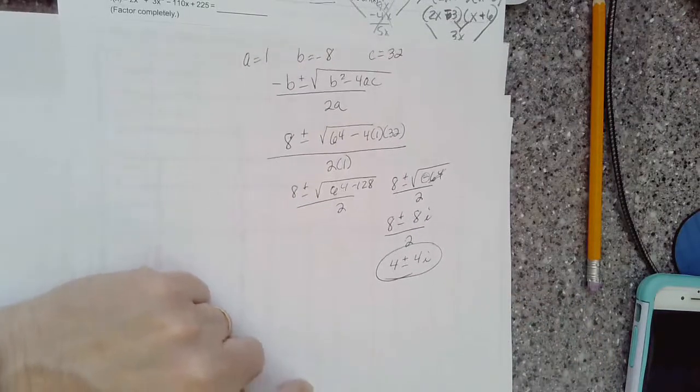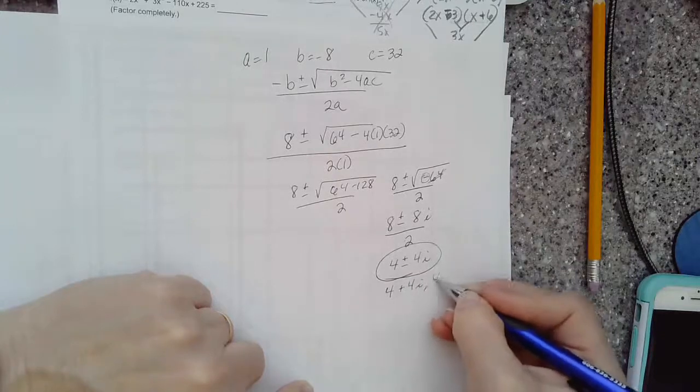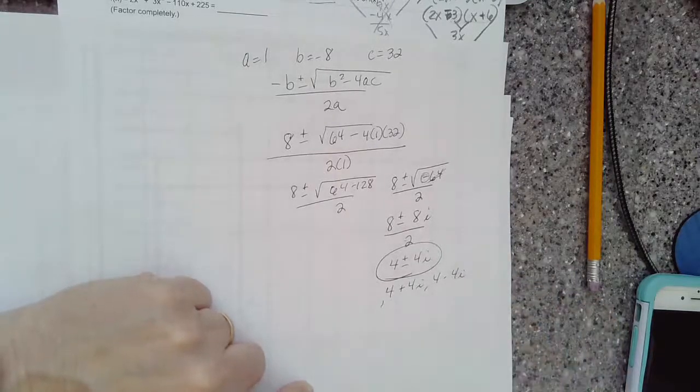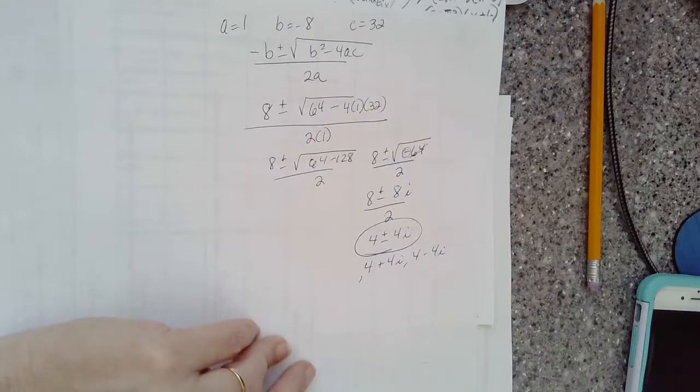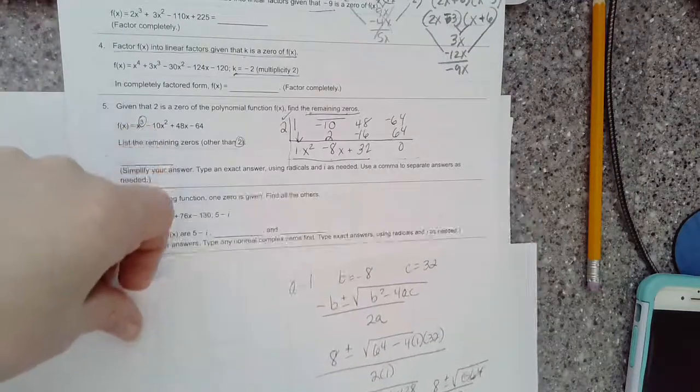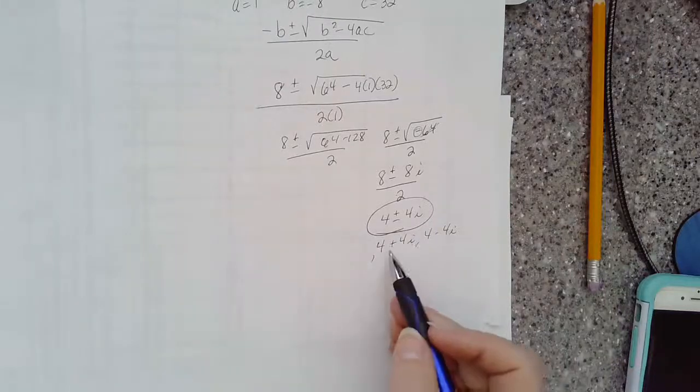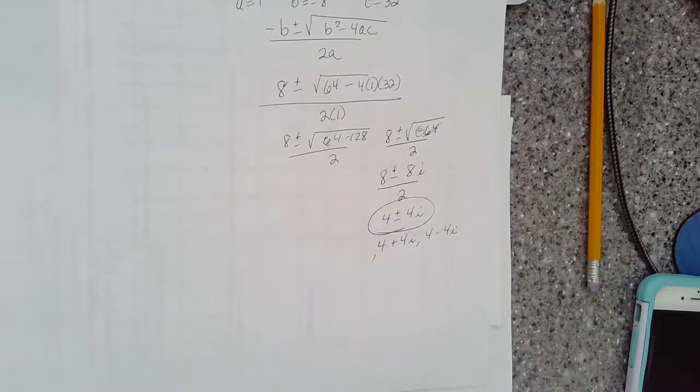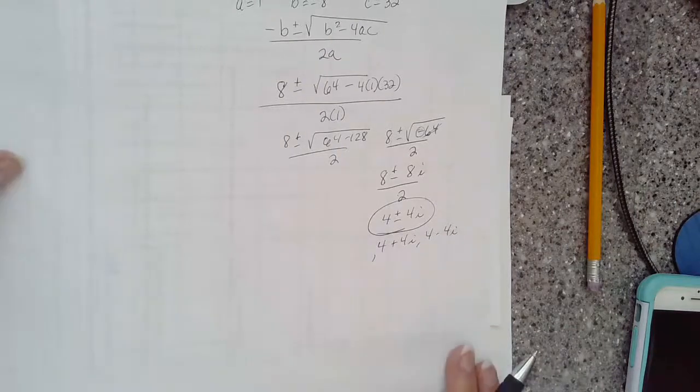If I were graphing this polynomial like you'll do in the next section, you'll only have one real solution, and that is the number 2 that we used at the beginning. X equals 2 crosses the graph. The other two imaginary solutions won't see them on the graph. So that's what we fill into the blank on number 5.